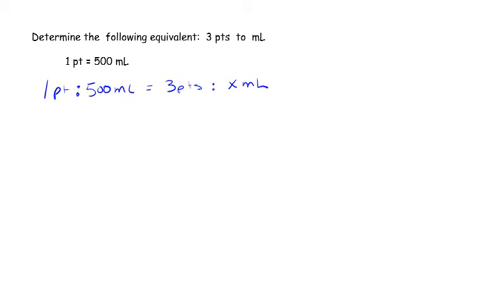So to solve this one, we're going to do means and extremes, or innies and outies. 1 times x is x, 500 times 3 is 1500. In this case, we don't need to go any further. We just take our label from what is next to x.